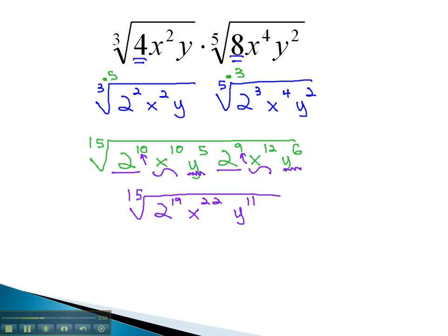However, you may notice that several of our exponents are higher than the index. We can simplify these using much the same method that we have before of dividing the exponent by the index. Dividing 19 by 15 gives us one 2 coming out and the remainder of 2 to the 4th, because 15 goes into 19 once with a remainder of 4.